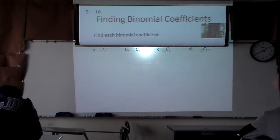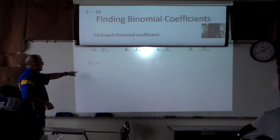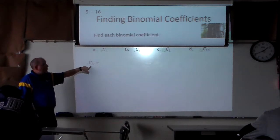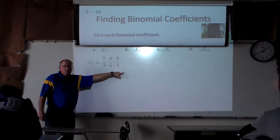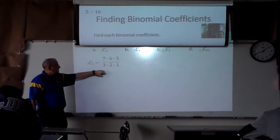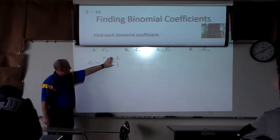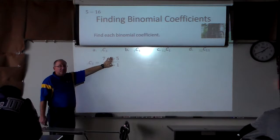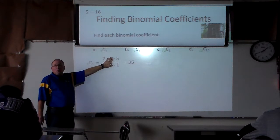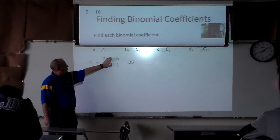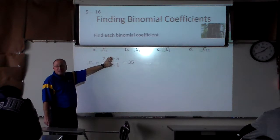Now, what's the shortcut way to do this? Start with 7 and write how many numbers? 3. So, 7 times 6 times 5, over 1 times 2 times 3. What's nice — 3 times 2 is 6, so we cancel that 6. What's 7 times 5? It looks hard, but when you do it that way, it's really easy.